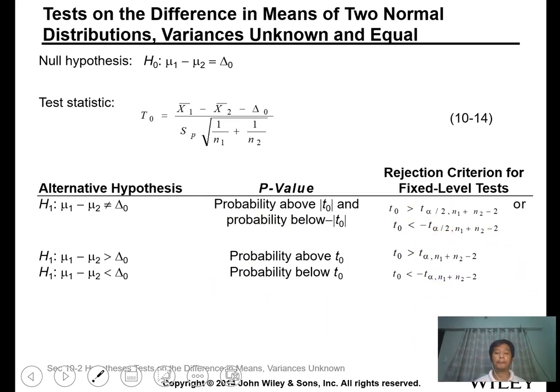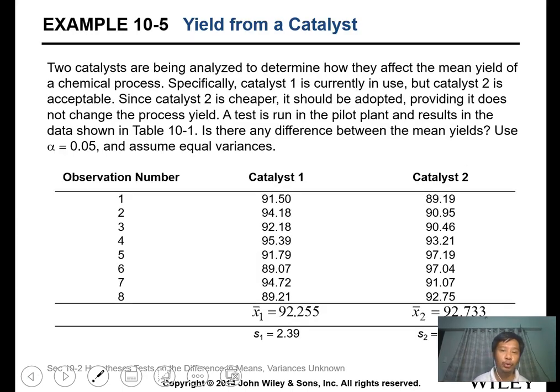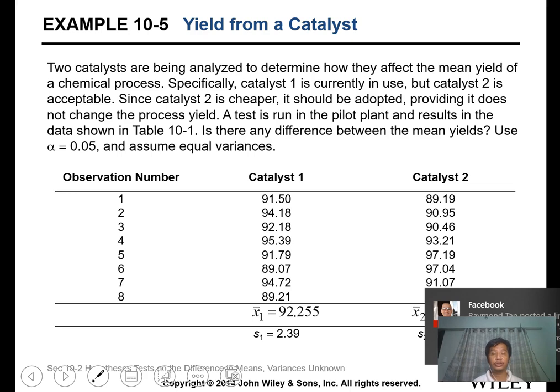Let's have this example. We have two catalysts, 1 and 2, being utilized for the reaction, and this affects the yield of a chemical process. Specifically, catalyst 1 is currently in use, then catalyst 2 is the new catalyst. Since catalyst 2 is cheaper, we want to know if this is acceptable in terms of yield. A test is run in the pilot plant with results shown in this table. We have eight observations for each sample set. The mean value and standard deviation are already given or calculated.